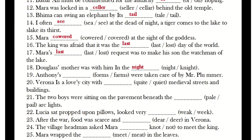Antoni's farms were taken care of by Mr. Plumber — farms, F-A-R-M-S meaning thota galhu. Verona is a lovely city with dash medieval streets and buildings — quiet. The two boys were sitting on the pavement beneath dash arc lights — pale. Lucia sat propped upon pillows and looked very weak, W-E-A-K. After the war, food was scarce and dear in Verona. The village headman asked Mara not to meet the king — not, K-N-O-T meaning gantu. Mara wrapped the meat in the leaves — meat, M-E-A-T.